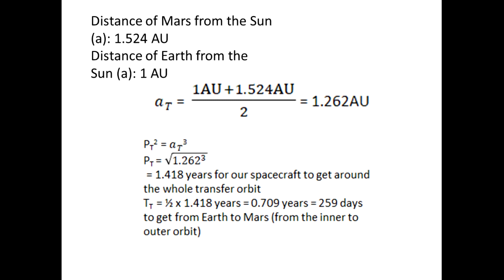However, we're only going to go halfway around the transfer orbit to get to Mars. So we're going to multiply that by a half, and that gives us 0.709 years, which is equal to 259 days.